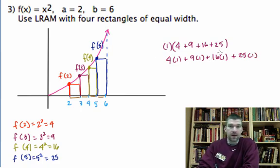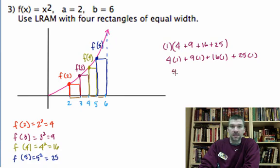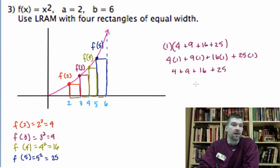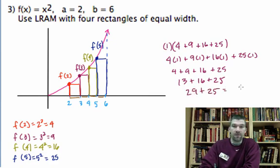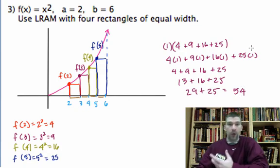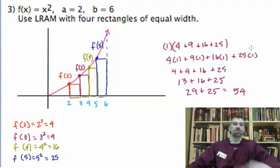Either way they're both correct and then we just add all these guys up, so 4 plus 9 plus 16 plus 25. When I add all those up that will give me the area approximation under the curve. 13 plus 16 plus 25, that's going to be 29 plus 25, and 29 plus 25 is going to be 54. And that's all you need to do on that guy, that's using LRAM with 4 rectangles.